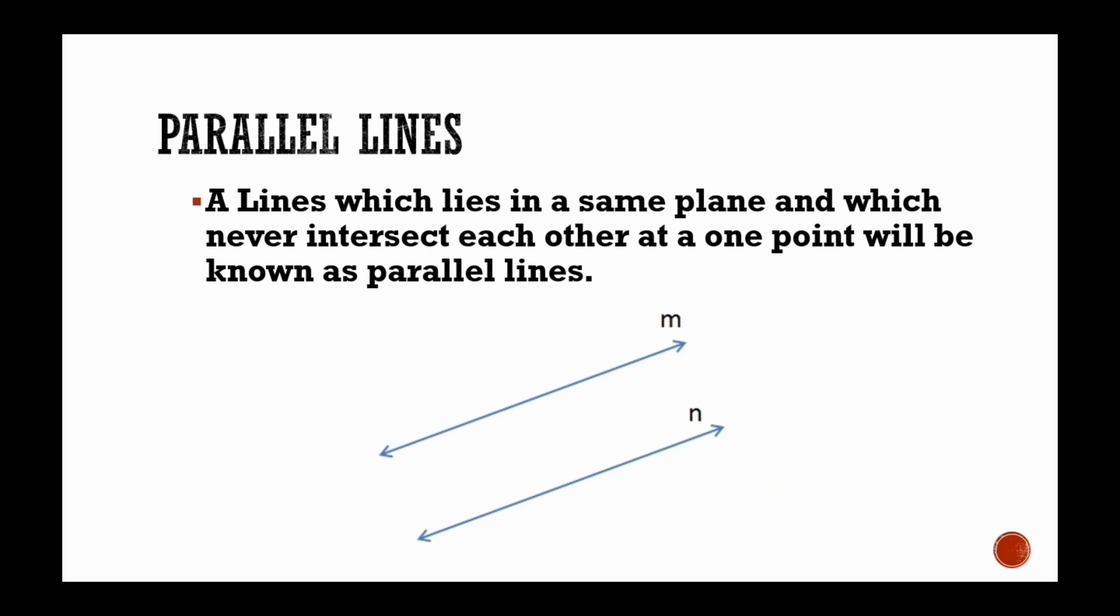Parallel lines. Lines which lie in the same plane and which never intersect each other at one point will be known as parallel lines. In the following figure, line M and line N are parallel lines.